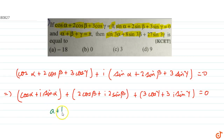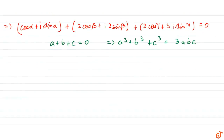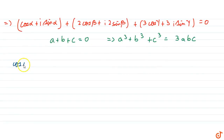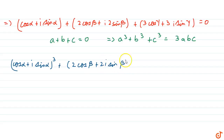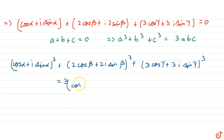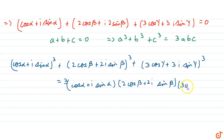Now we use the identity: if a plus b plus c equals 0, then a cubed plus b cubed plus c cubed equals 3abc. Applying this identity, we get: the quantity cos alpha plus iota sin alpha whole cube, plus 2 times cos beta plus 2i sin beta whole cube, plus 3 cos gamma plus 3i sin gamma whole cube, equals 3 times of cos alpha plus iota sin alpha, times 2 cos beta plus 2i sin beta, times 3 cos gamma plus 3i sin gamma.